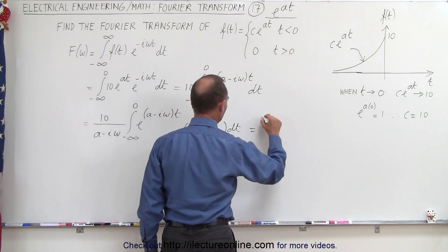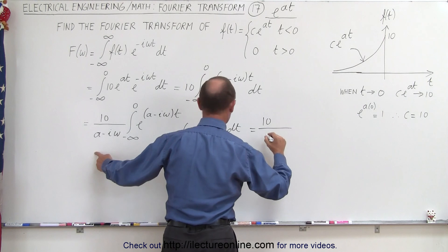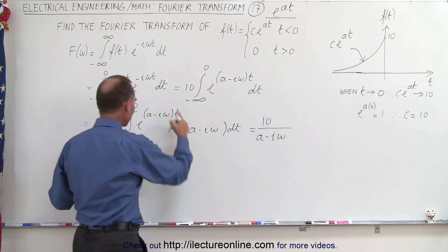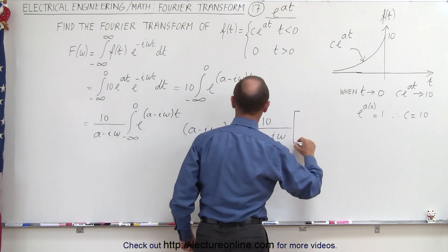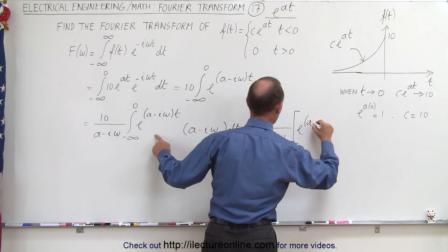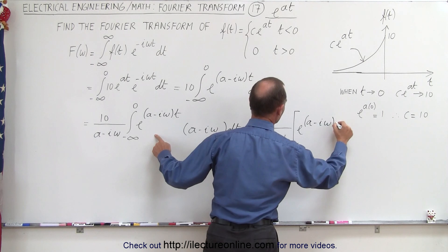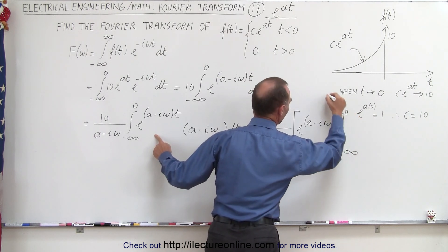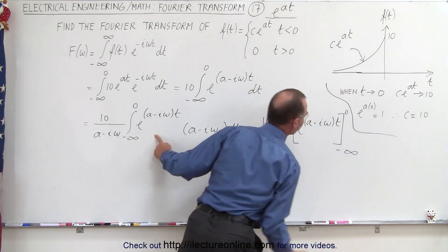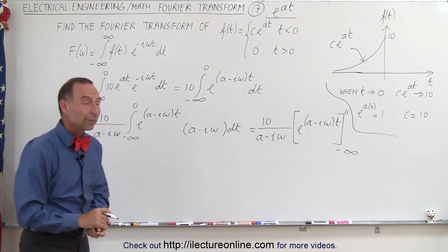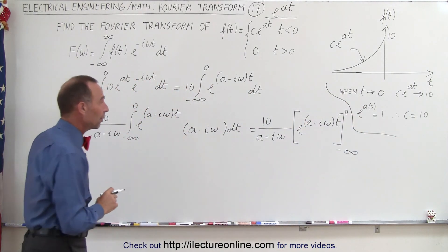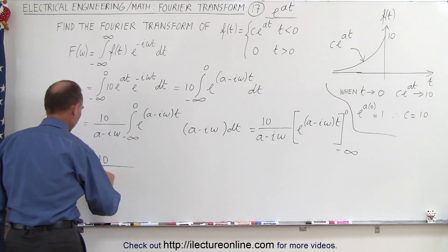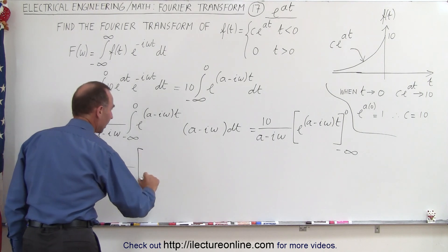When we integrate that, we get the following: this is equal to 10 divided by a minus i omega, and then we have the quantity e to the a minus i omega times t, evaluated from minus infinity to zero.